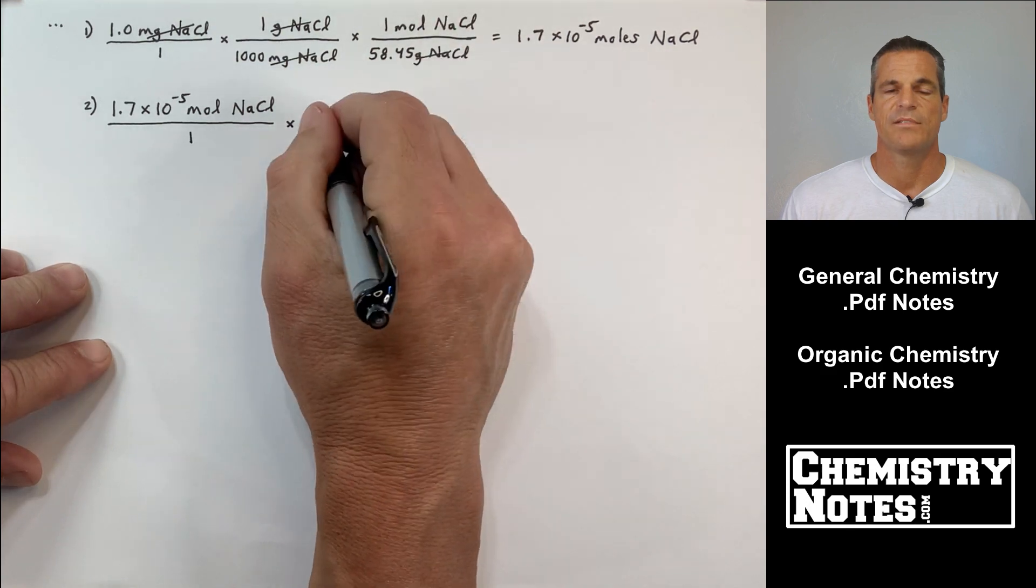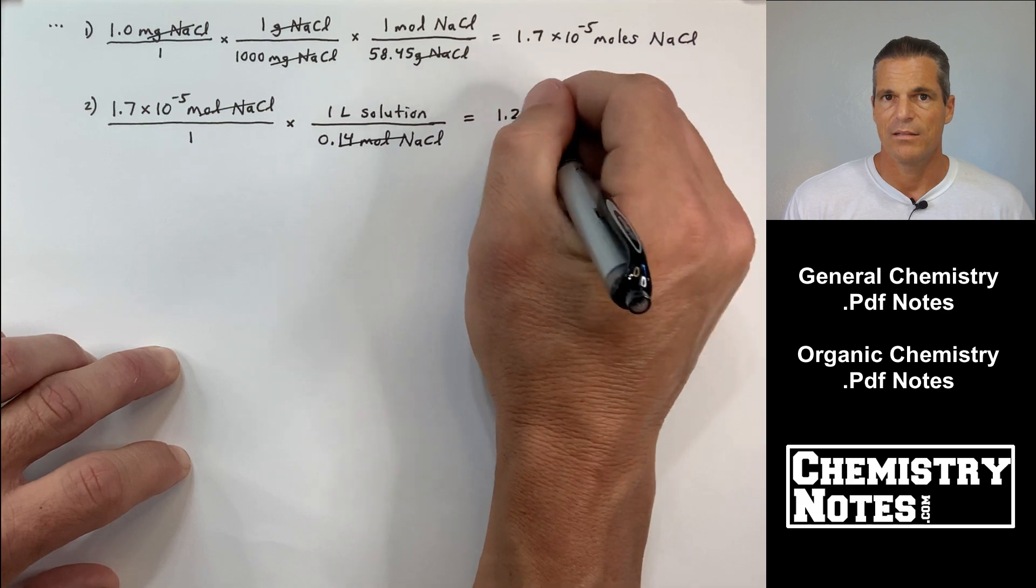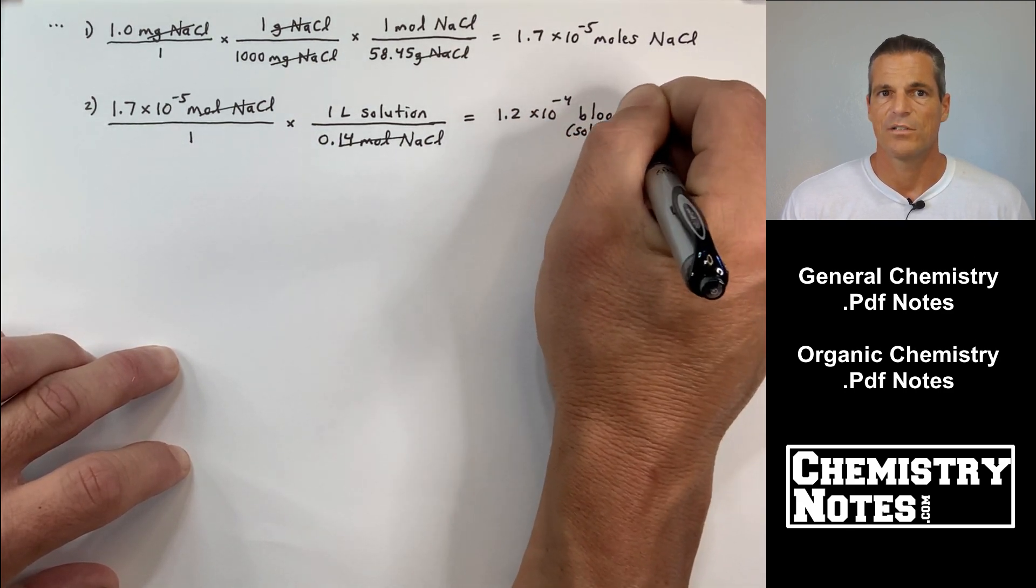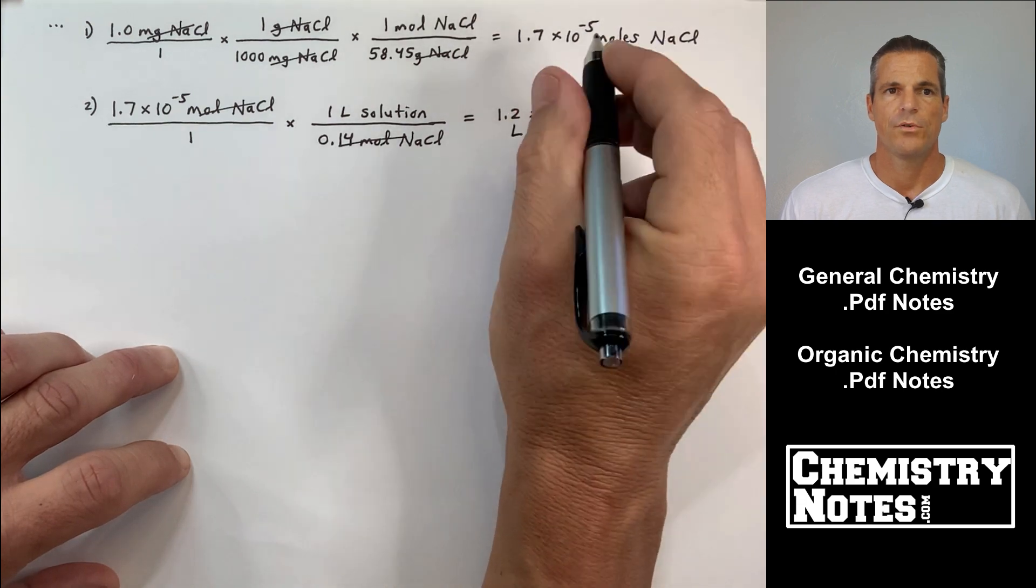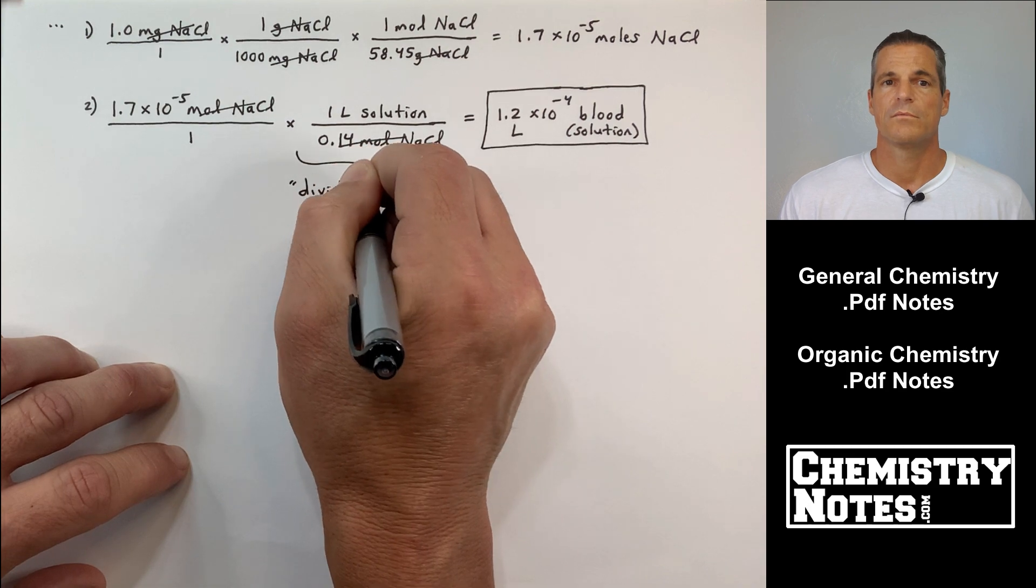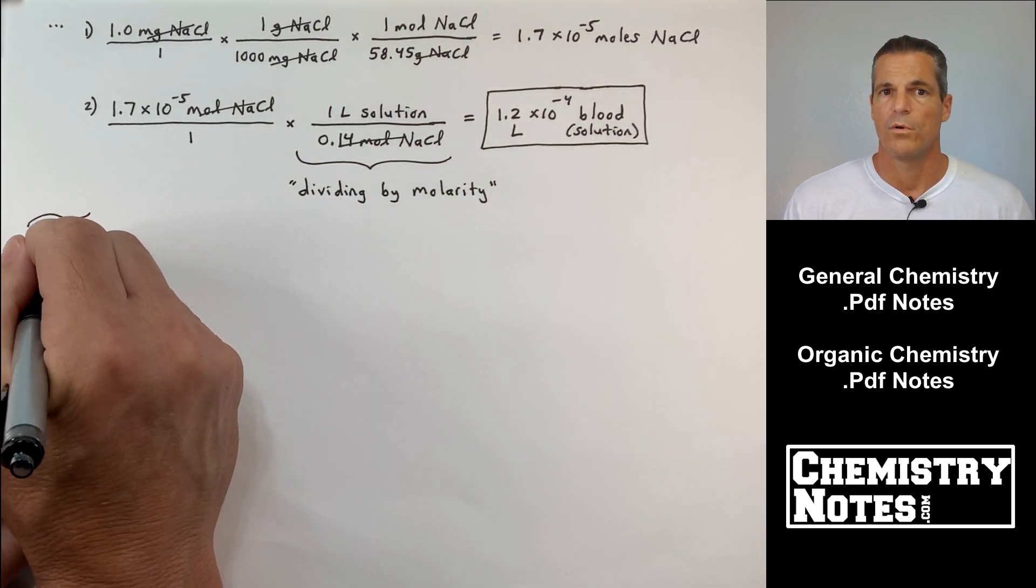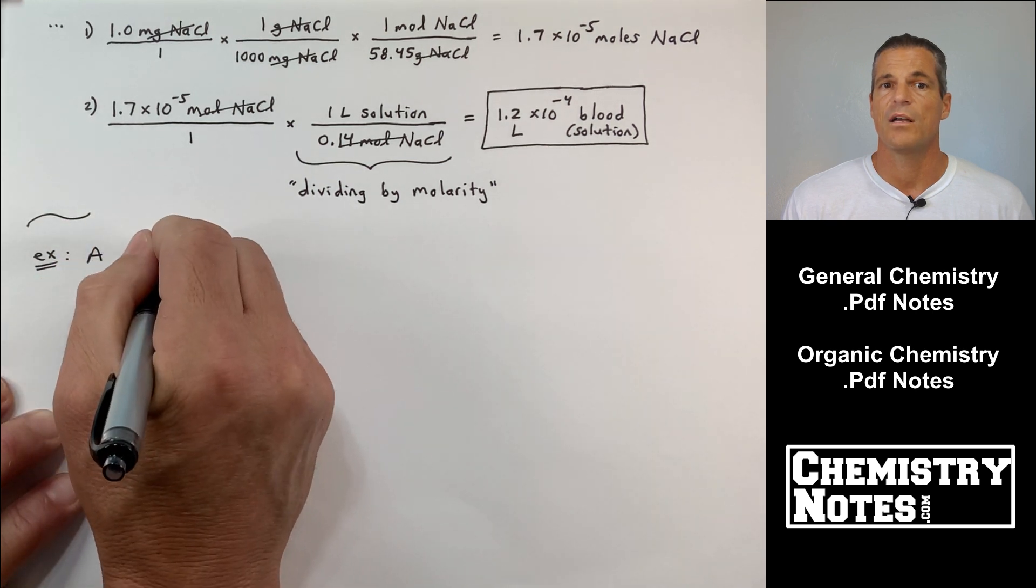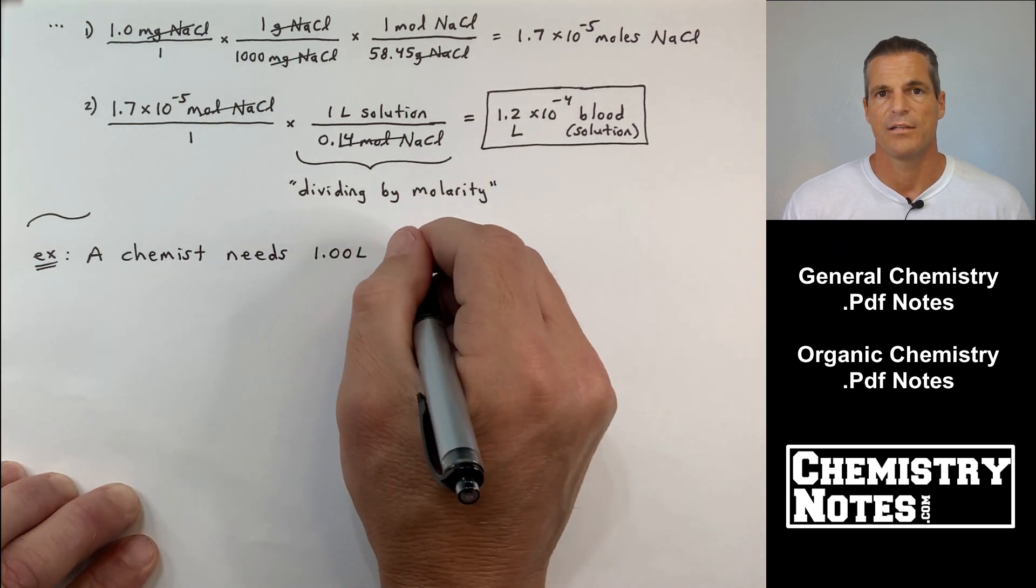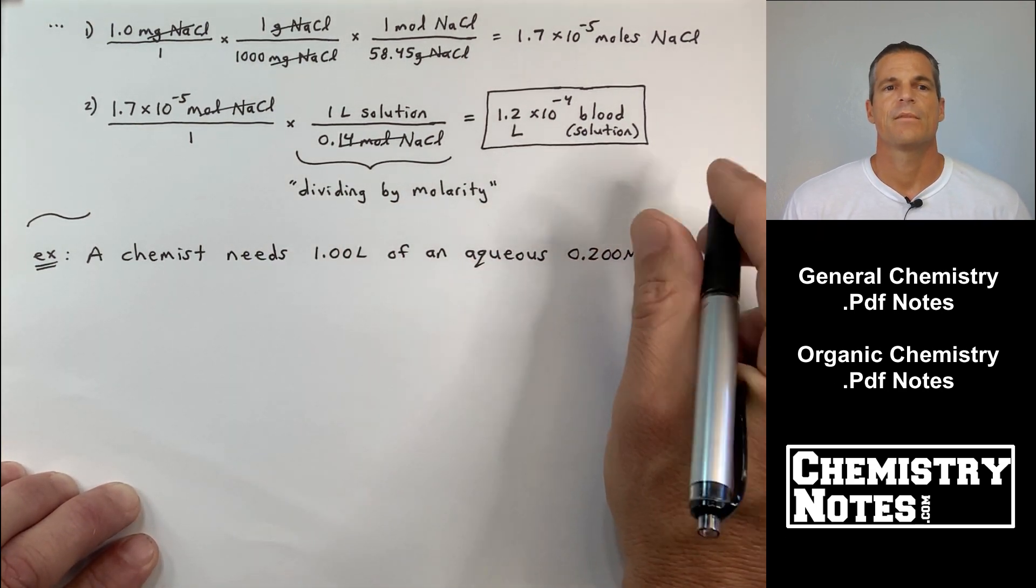So I use that in number two right here. 1.7 times 10 to the minus fifth moles of NaCl divided by the molarity of the solution is going to give me liters of solution. So number two, 1.7 times 10 to the minus fifth moles of NaCl times one liter of solution over 0.14 moles NaCl gives me an answer of 1.2 times 10 to the minus fourth liters of blood. And then the blood is our serum. It's our solution.